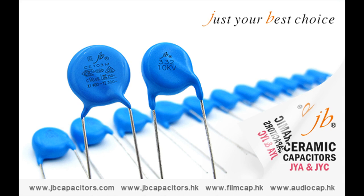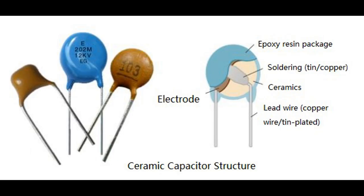Capacitors consist of two conductive plates, typically made of metal, that serve as terminals for the device. One plate is connected to the positive terminal of the circuit, while the other is connected to the negative terminal. The dielectric material, which serves as the insulating layer between the plates, is placed between the electrodes.